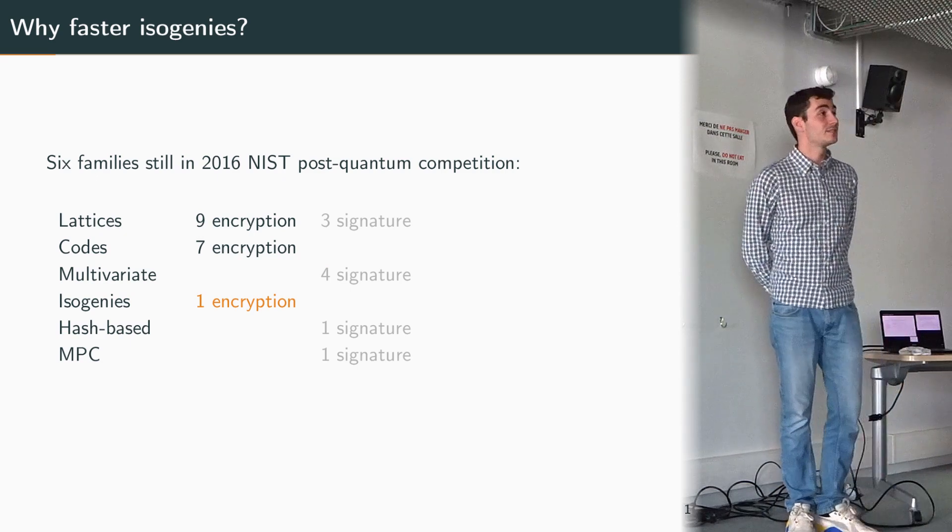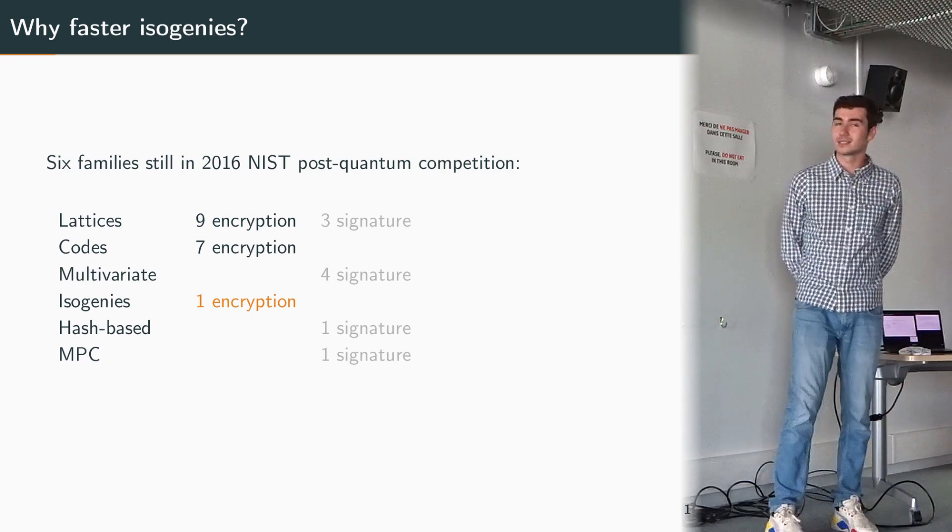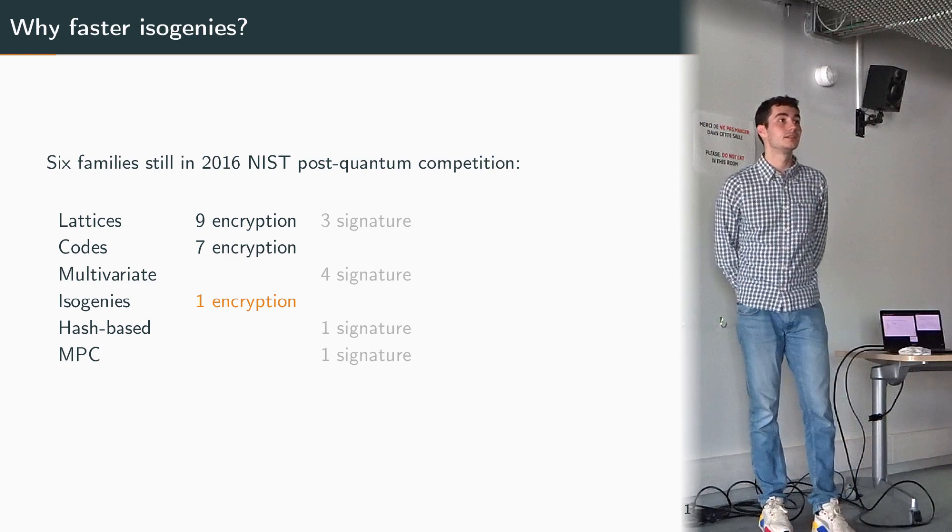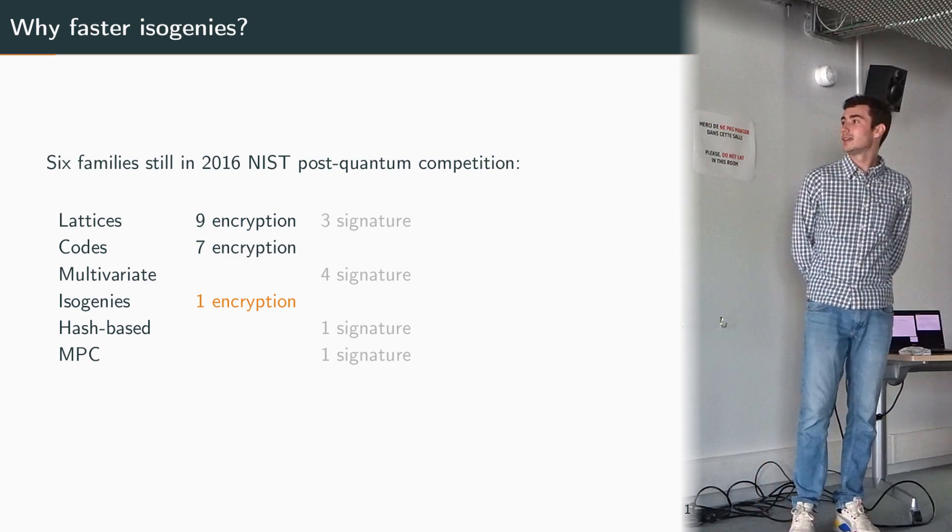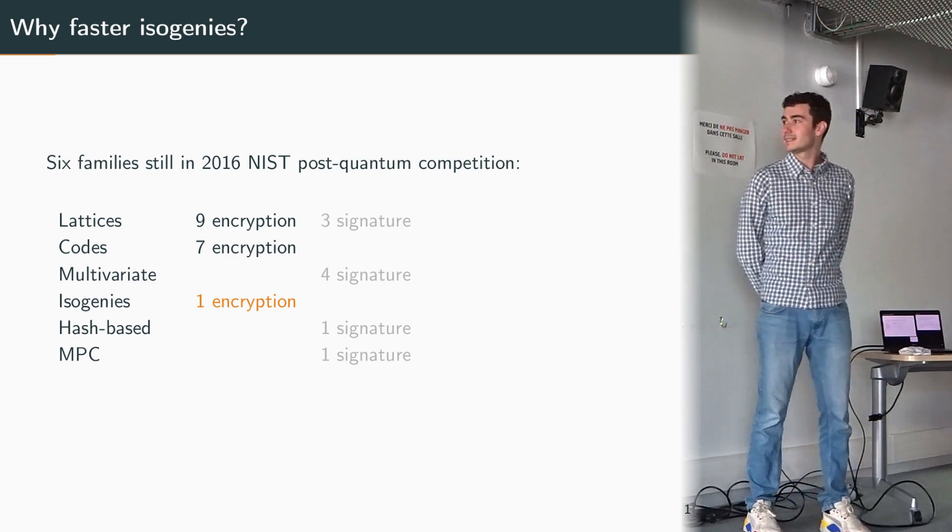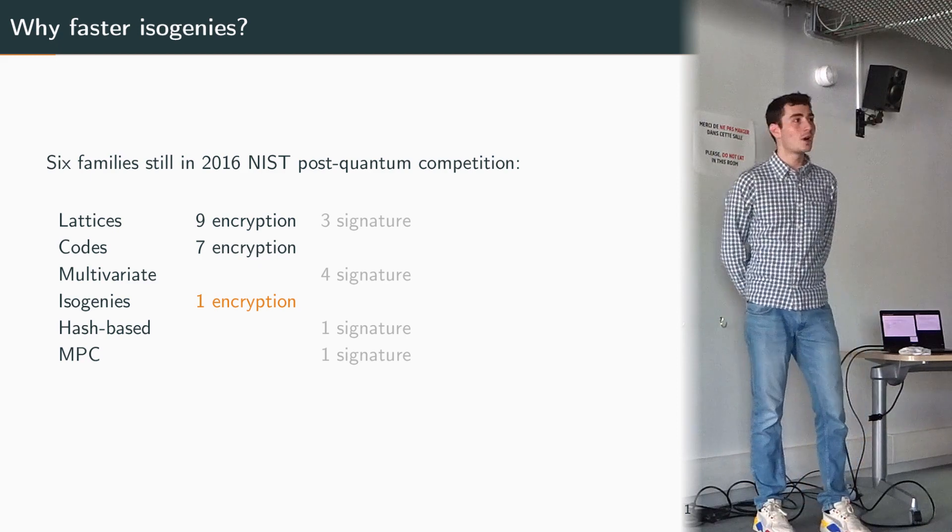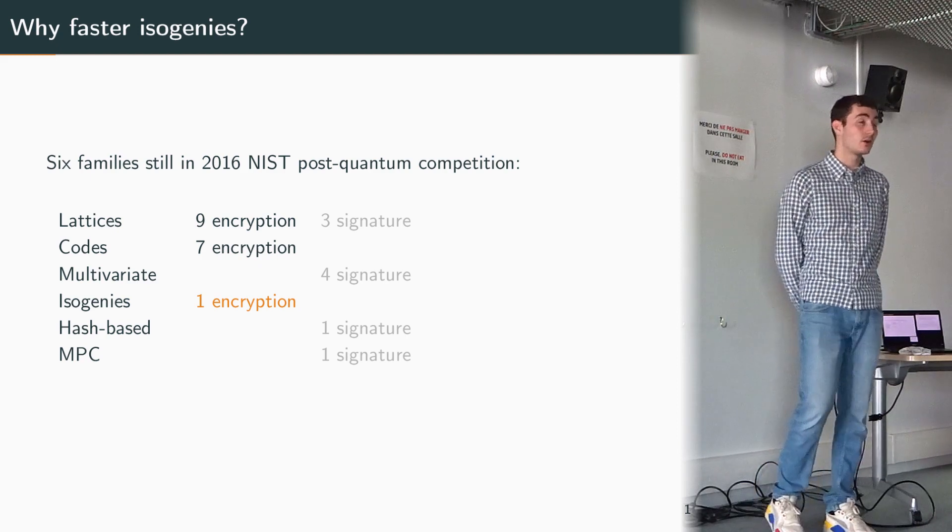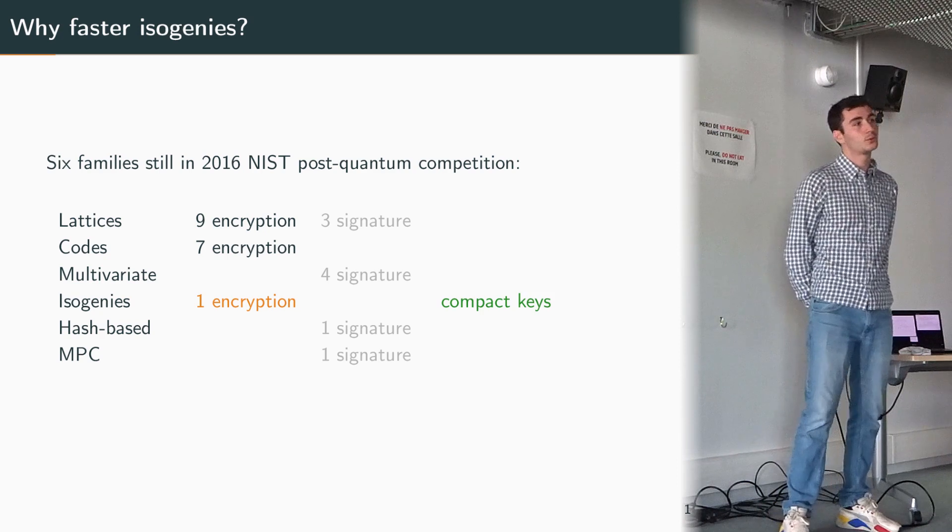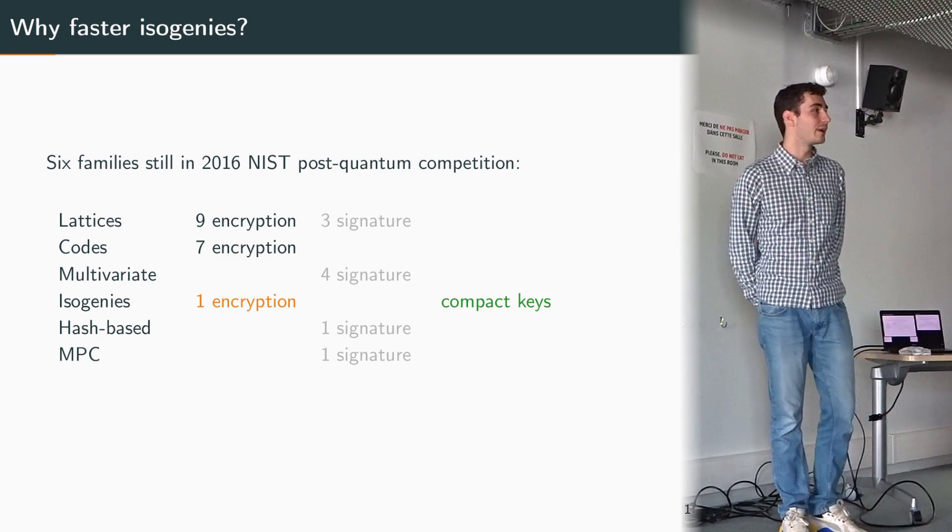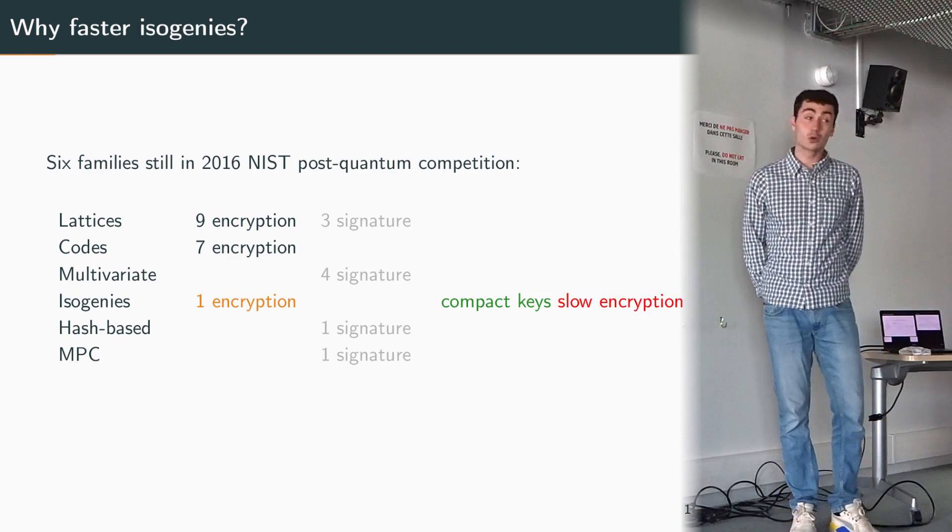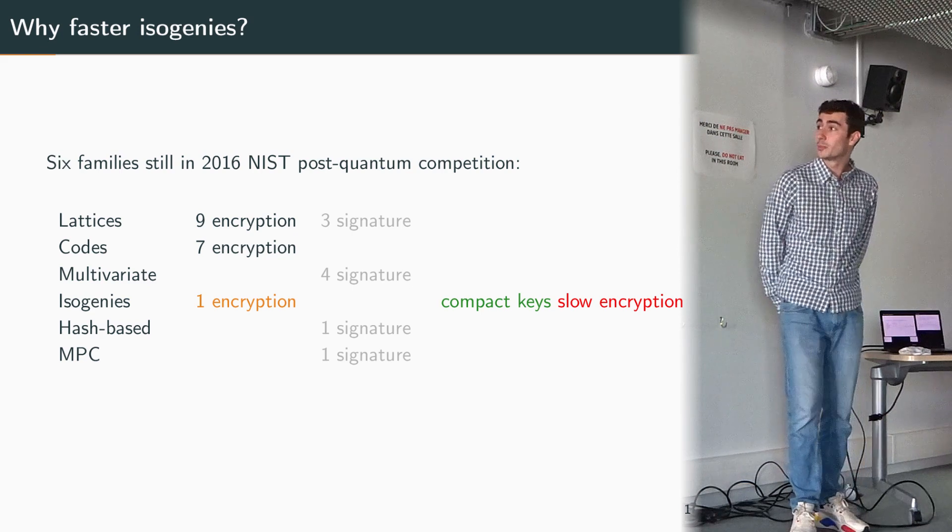So the first question is of course why bother with faster isogenies? Well, isogenies are one of the six families that are still in the NIST post-quantum competition, represented by one candidate, an encryption scheme. While isogenies are not as popular as other solutions such as lattices, they offer some nice features and the most important one is that the keys are very compact. Of course this comes with the downside that the encryption is rather slow compared to other solutions.